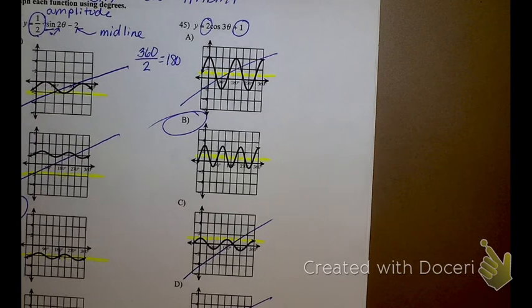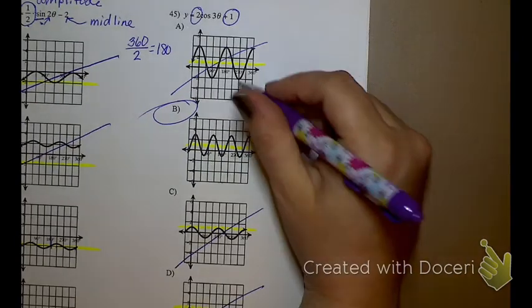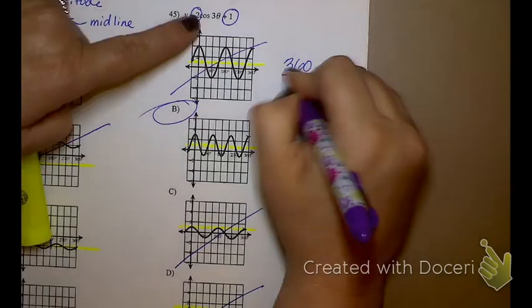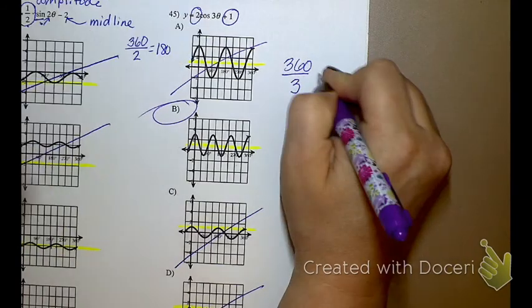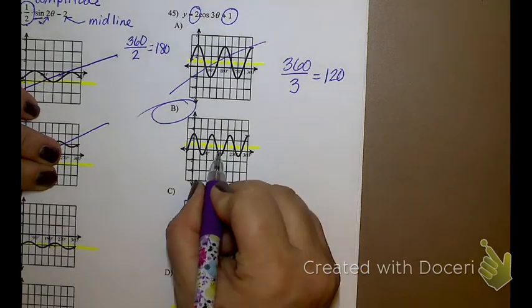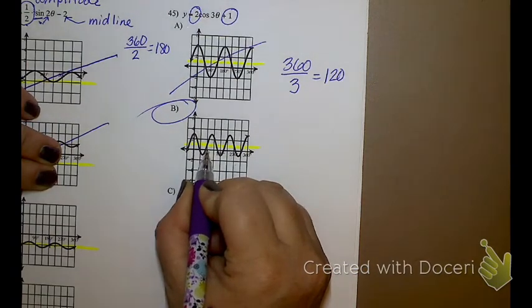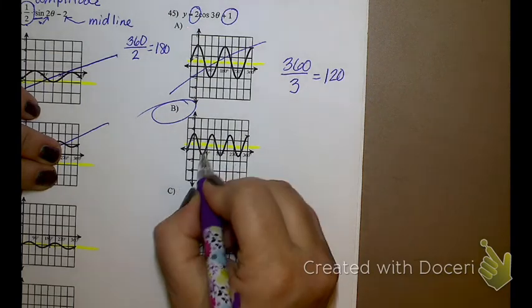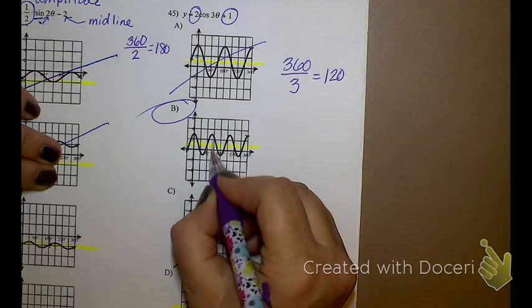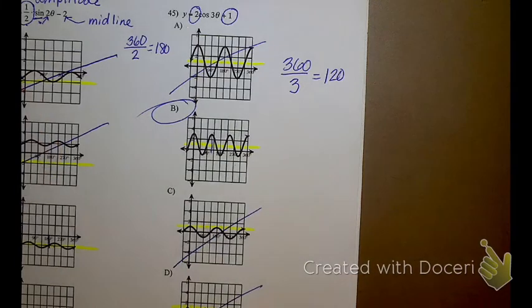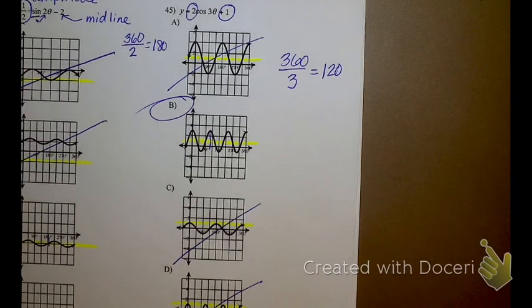We could also verify it by the period. Again, we're talking degrees in all these graphs. So 360 divided by B, which is 3, is 120. And let's see, 360, 180, 120 looks like it's right about there. Top, middle, bottom, middle, top. 120 is probably actually right about there. That's 90. Looks like we're pretty good there.